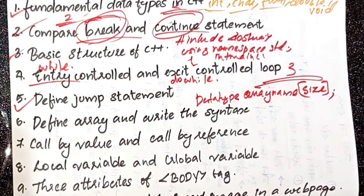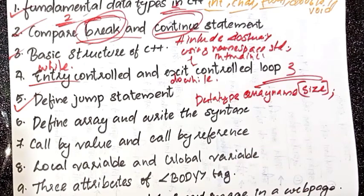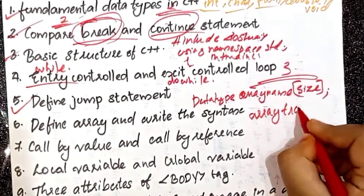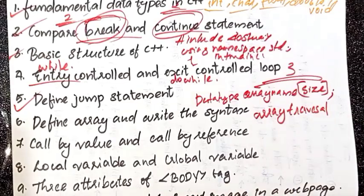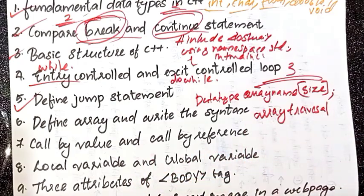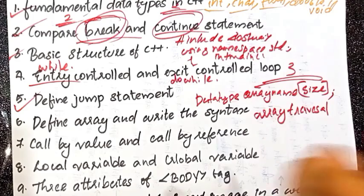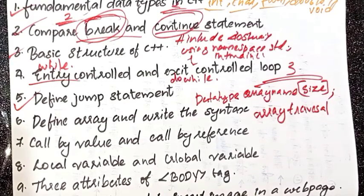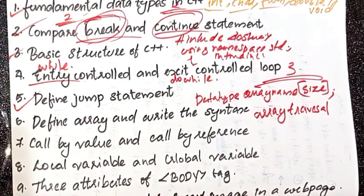Array is correct. The next one — I will write the syntax for collections. Accessing each element of an array at least once to perform any operation — one operation, one task. Array traversal syntax: array traversal. Then next: call by reference and call by value method — two important methods, four points.